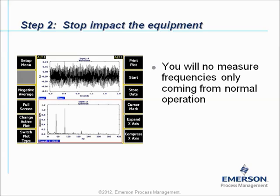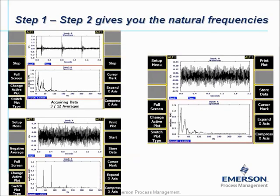Step two is that you stop impacting the machine. When you stop impacting, you only measure vibration coming from normal operation, so the peaks in the spectrum are now from normal operation only. The software will then subtract both images from each other — the peaks from normal operation are subtracted from the step one image. What is left is a spectrum showing only the natural frequencies.